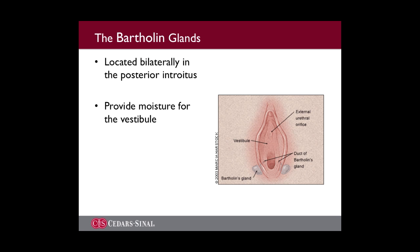Bartholin glands are located at the posterior introitus bilaterally and drain through ducts that empty into the vestibule near the 4 o'clock and 8 o'clock positions. These glands begin to function at puberty, providing moisture for the vestibule. These normally pea-sized glands are only palpable if the duct becomes cystic or a gland abscess develops.